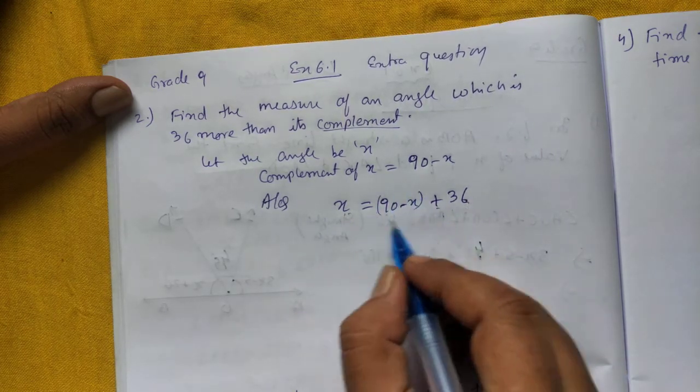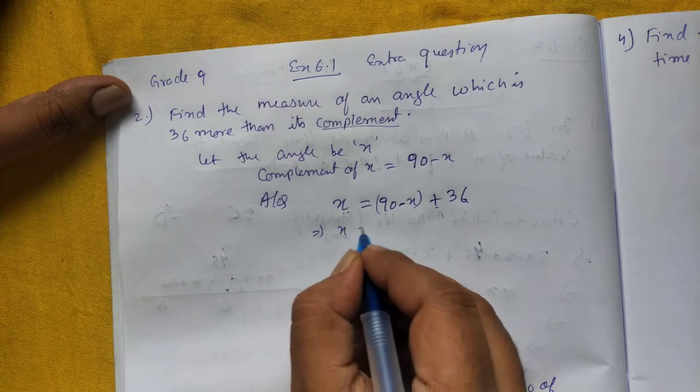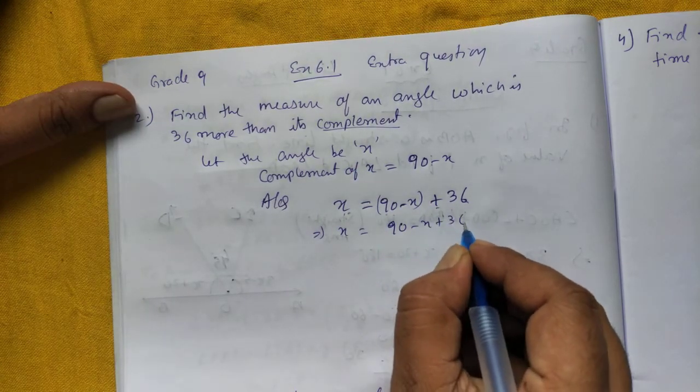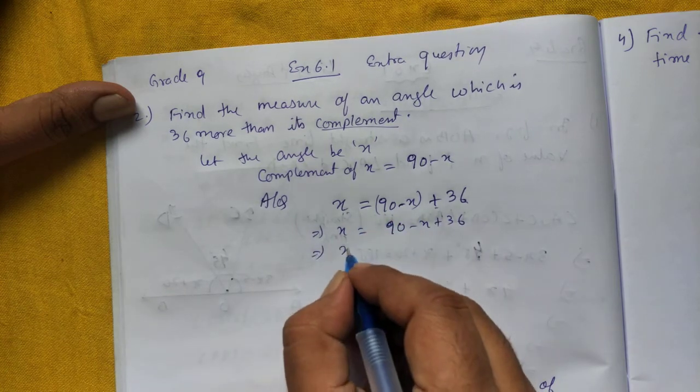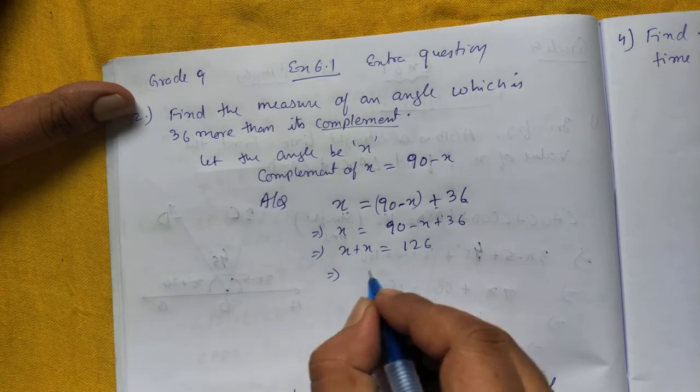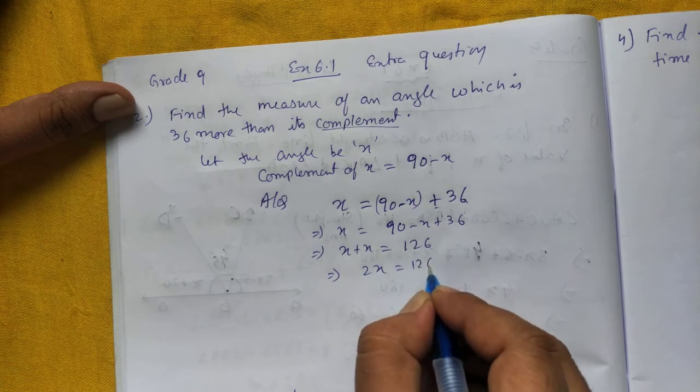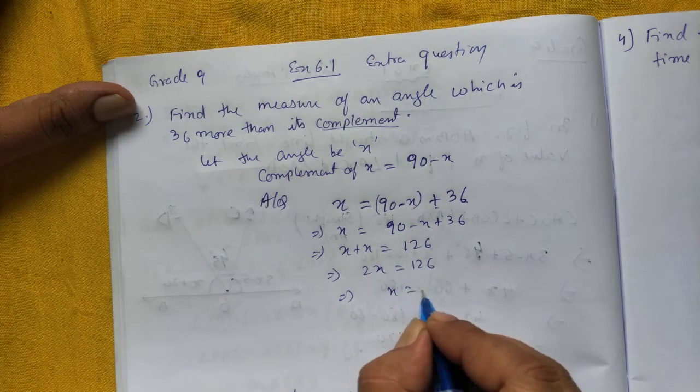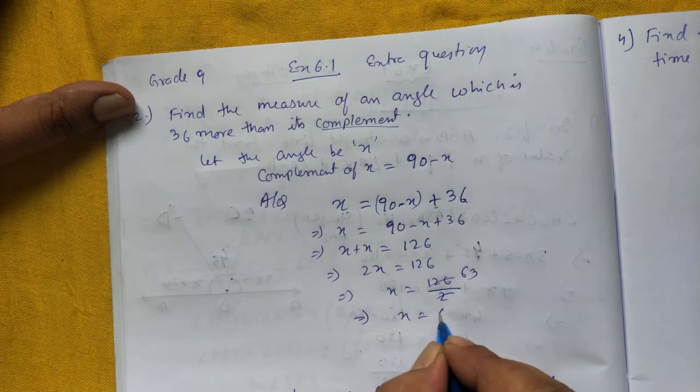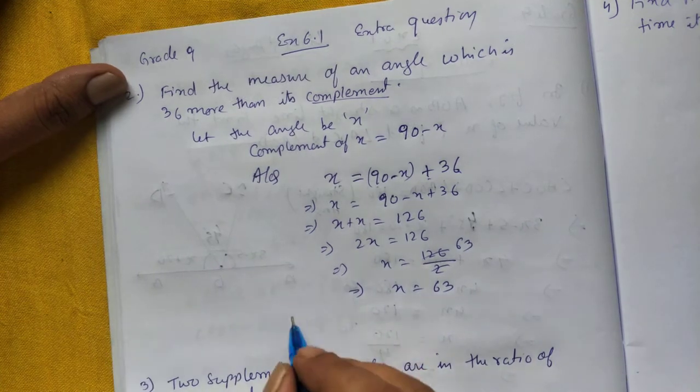Angle is 36 more than its complement. So let us find X, we will get the answer: X equals 90 minus X plus 36. Bring X here, X plus X equal to 90 plus 36 is 126. 2X is 126. So X will be 126 by 2, you will get 63. So therefore the angle is 63 degrees.